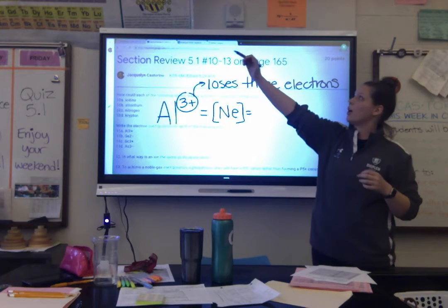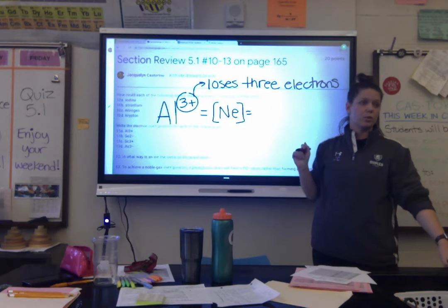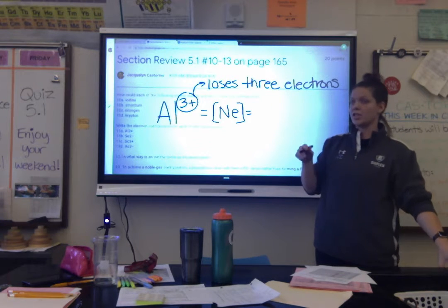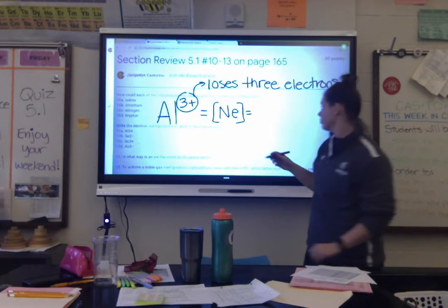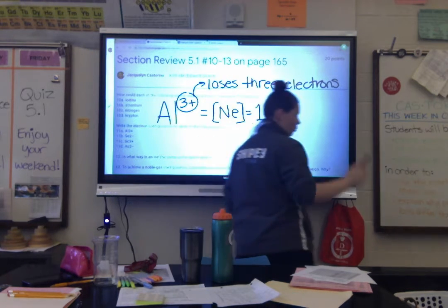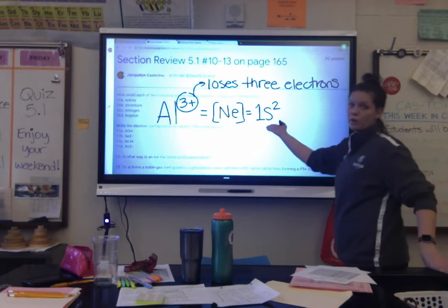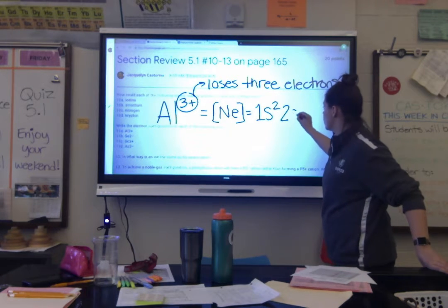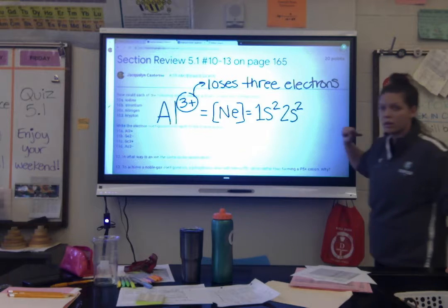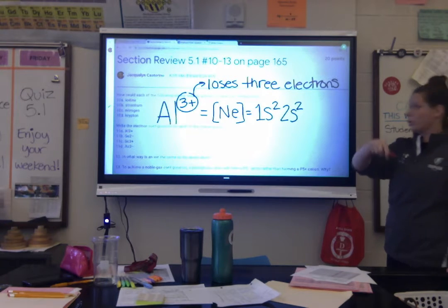We're going through the electron configuration again, and this time we go through the D block, so I want to remind you of the special rules there. We start top left: 1s², then 2s², then 2p6 — 6 columns in the p block. Then drop down: 3s², then 3p6, then 4s².